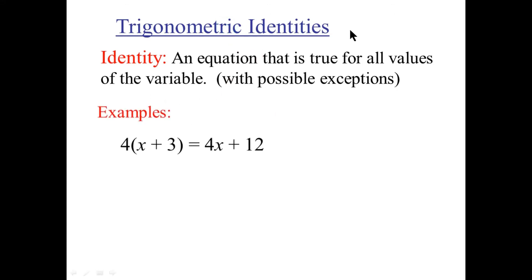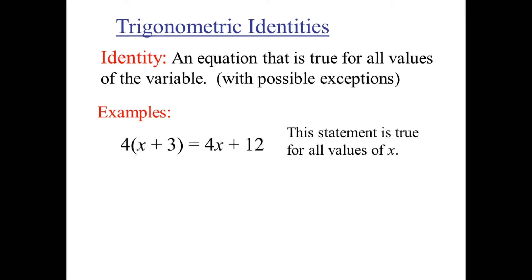Here's an example: 4 times x plus 3 equals 4x plus 12. This is an identity because it's true for all x — it's true that 4 times x plus 3 equals 4x plus 12. It's a very basic identity.